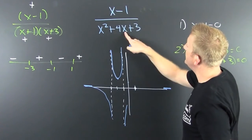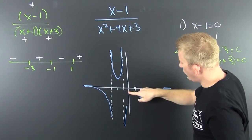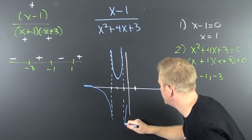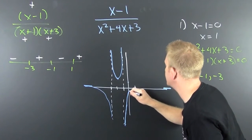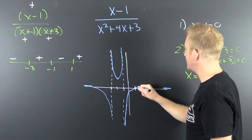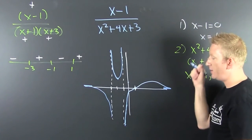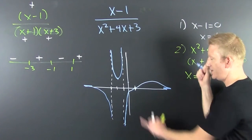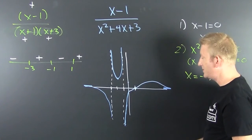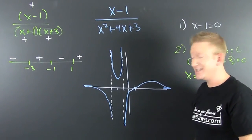So the curve crosses the y-axis at -1/3, hits the zero at x = 1 and crosses there, and then after x = 1 the function approaches 0 — consistent with our end behavior of going to zero. And that's the graph of our rational expression. We're done.